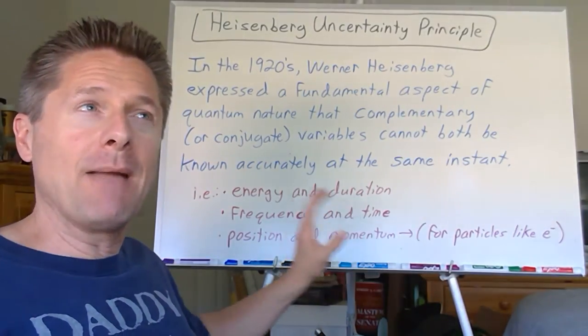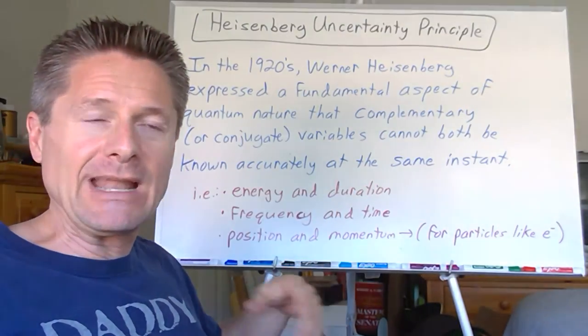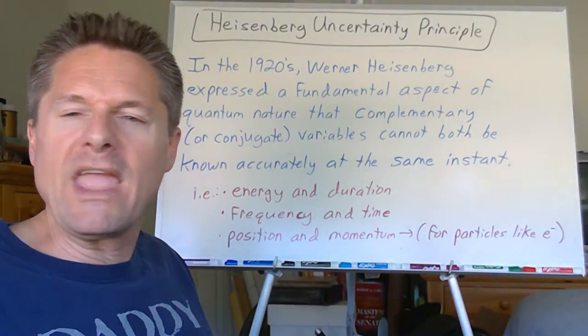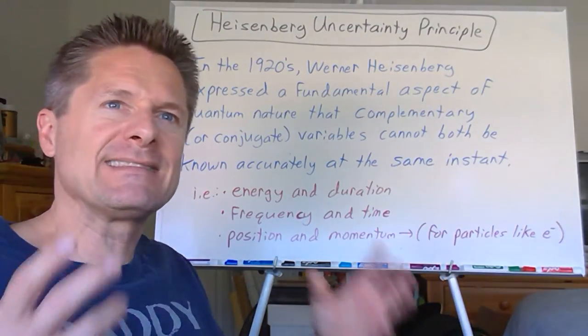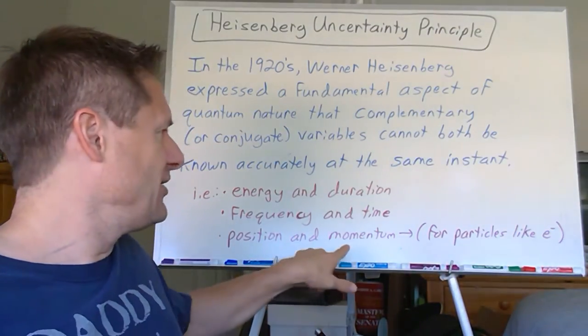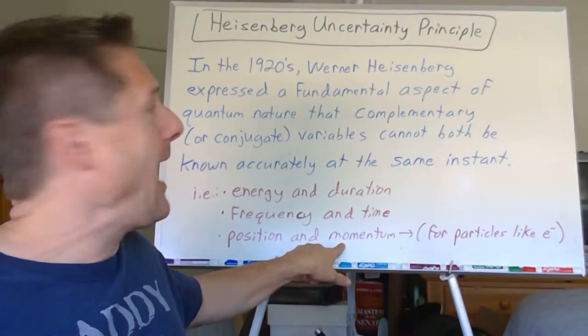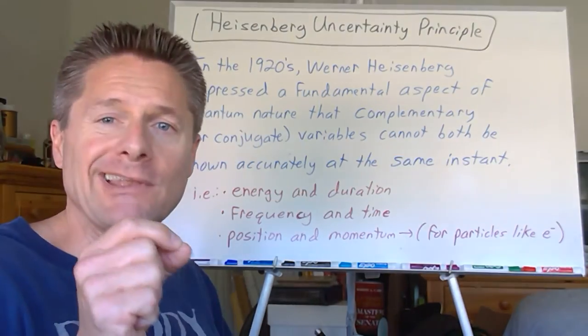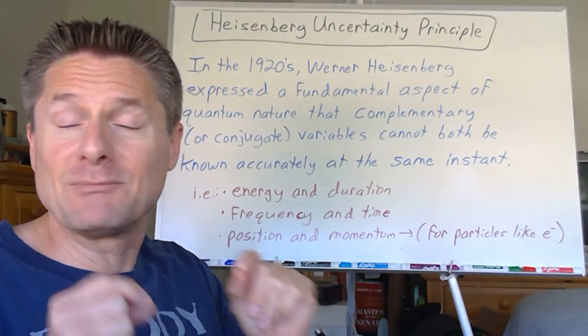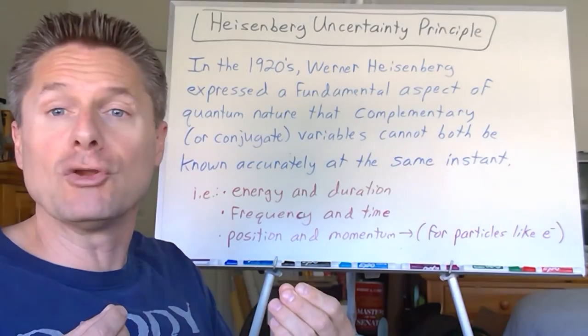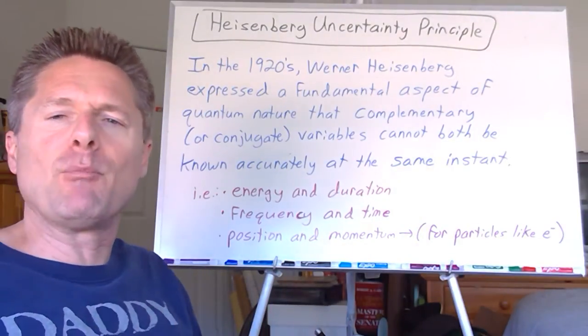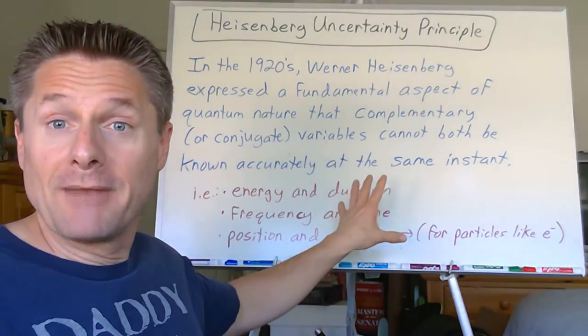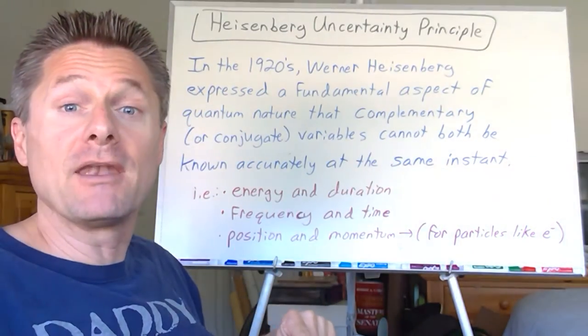Since we're focusing on electrons, we're going to focus on the position of an electron. Where is it? Around the nucleus somewhere. That's what we're trying to figure out. But thanks to de Broglie, it's a wave - that's impossible to do. And momentum. I'm going to write this in an equation that came from Heisenberg's way of looking at this.